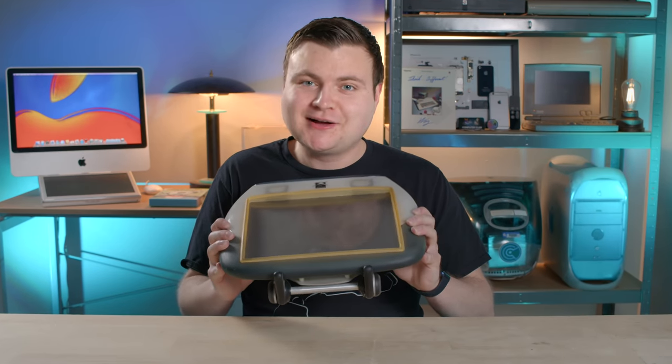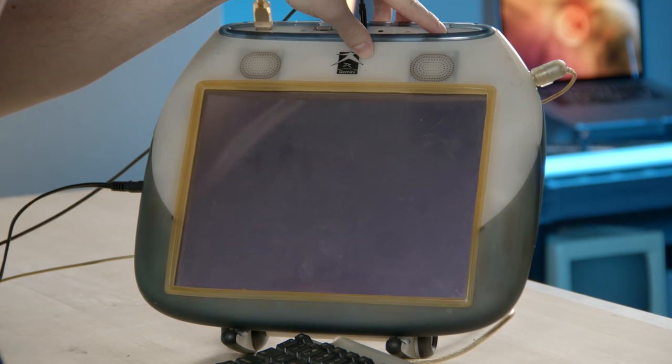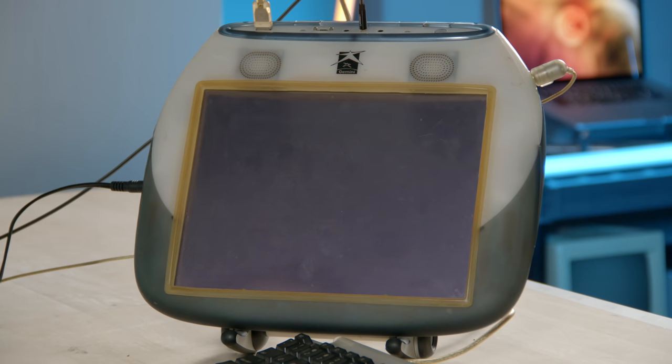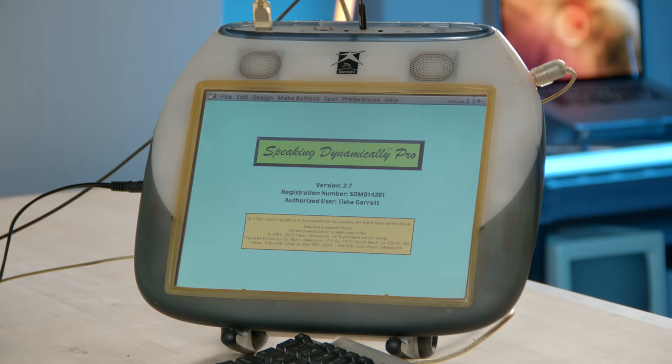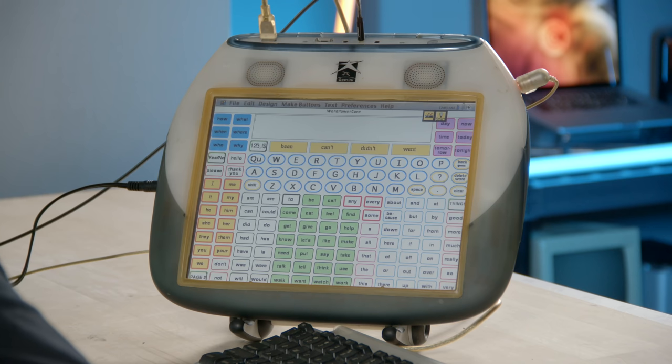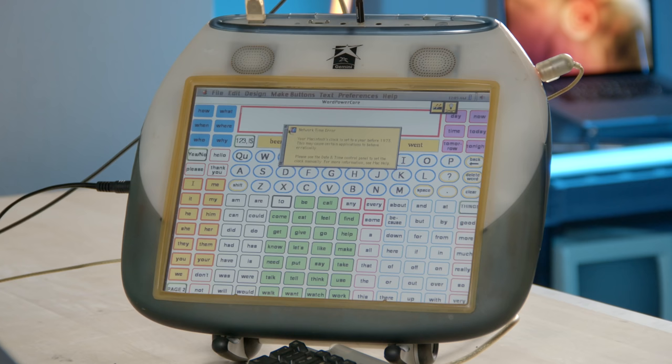You know what's next now, right? The software. Let's go ahead and boot it up with the relocated power button. And here we go. It's loading up Mac OS 9.1. The system is automatically loading up Speaking Dynamically Pro, which is one of the programs we're going to look at. I will hide it for now. Network time error.